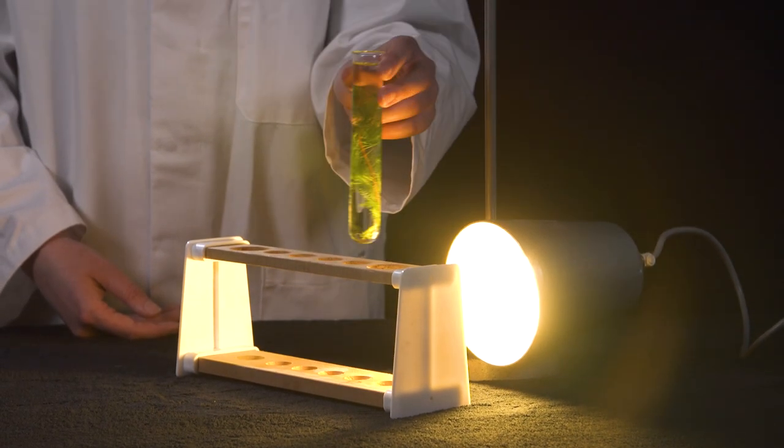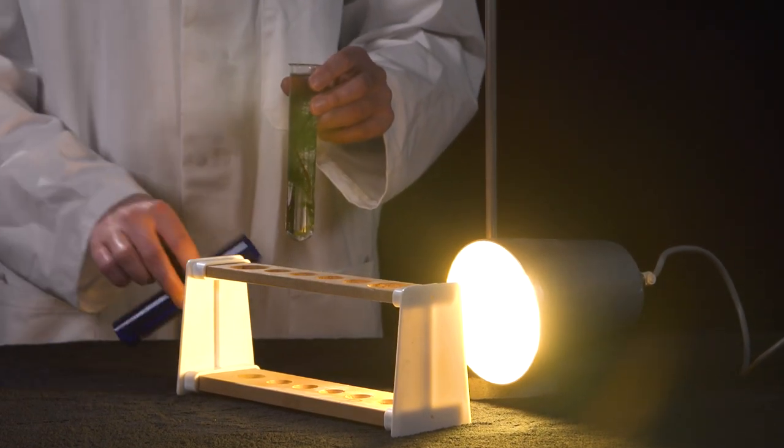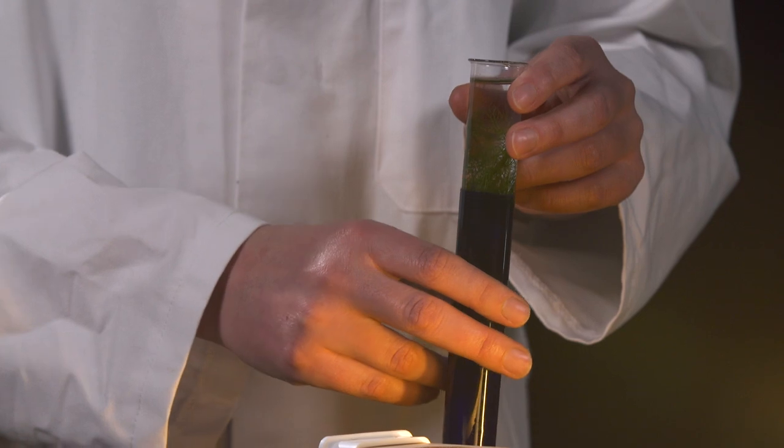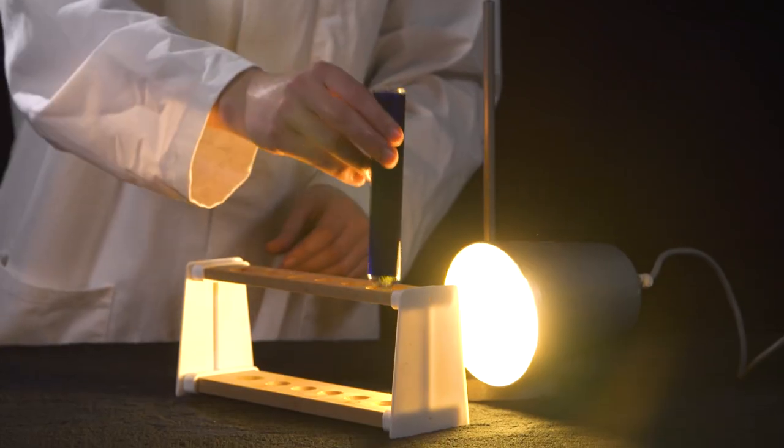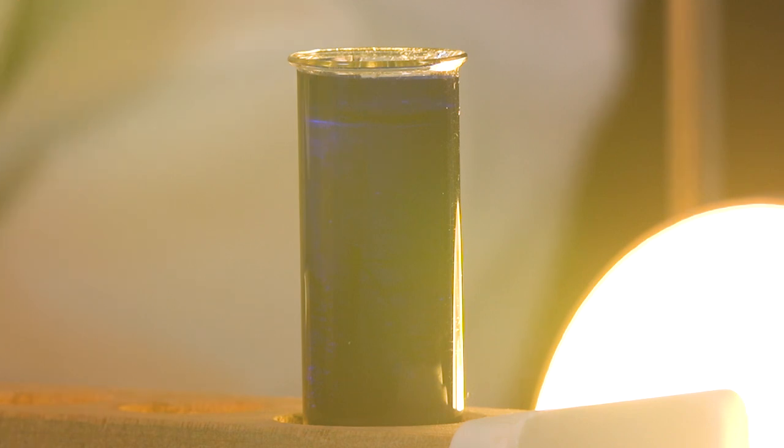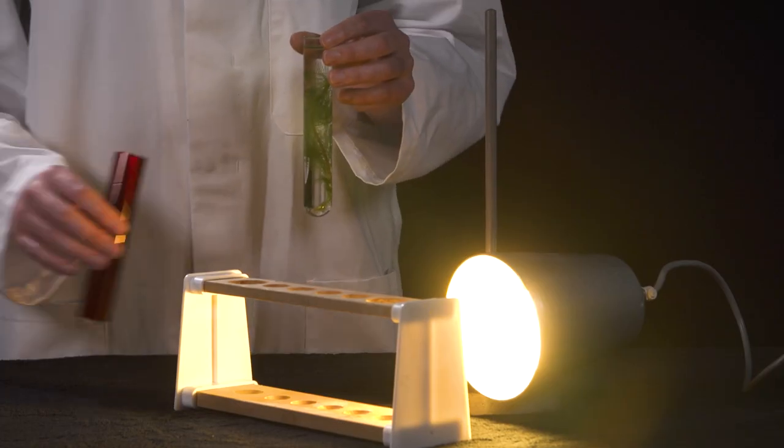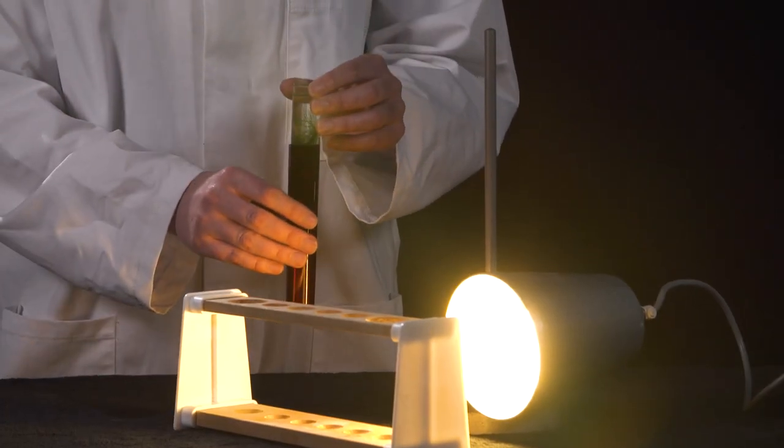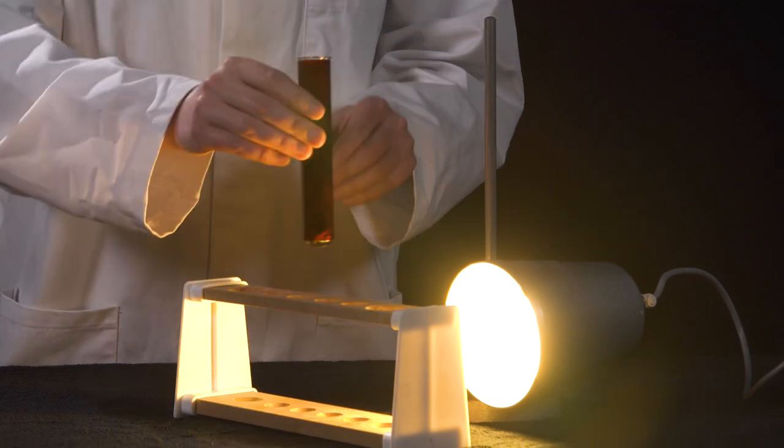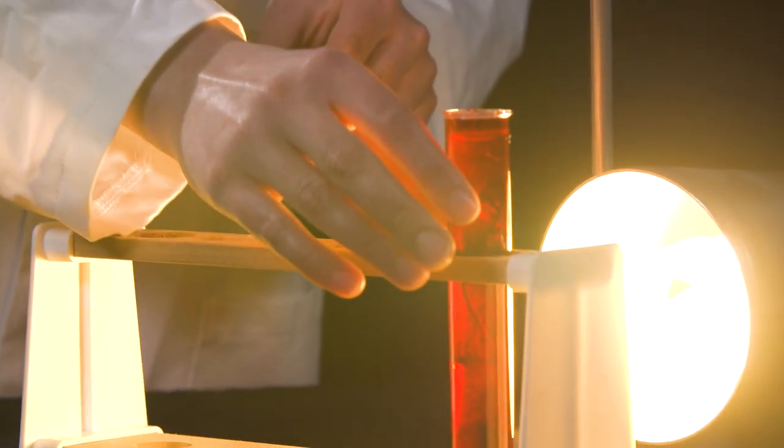Different coloured filter sleeves can be wrapped around the setup to allow students to investigate the effect of the wavelength of light on the rate of photosynthesis. From this they can develop their own absorption spectra and further their understanding of which wavelengths of light are used most efficiently by the plant.